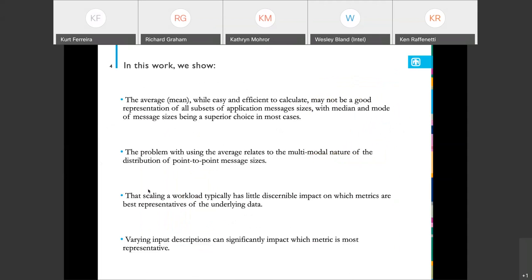If I can't hold your attention for the full talk, here's a summary. In this work we're showing that the average or the mean, while being easy to calculate and efficient to calculate, may not be a very good representation for all the subsets of the application message size data. The problem with using the mean or the average relates to the multimodal nature of the distribution of point-to-point messages.